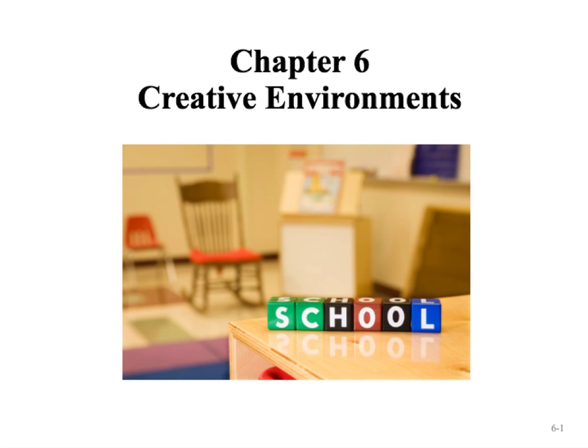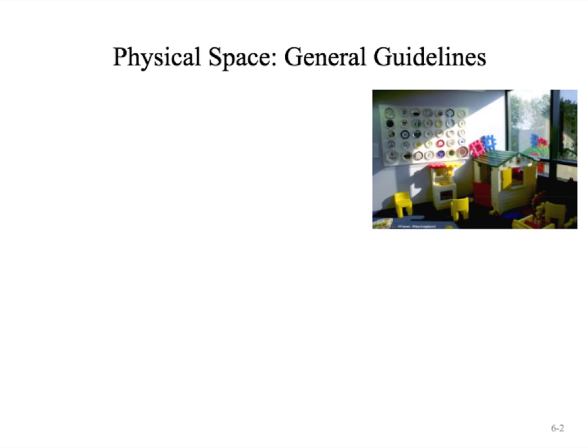Chapter 6: Creative Environments. Things that need to be considered when creating an environment for young children include physical space. I'm going to list some of the things covered in Chapter 6 that you need to consider when thinking about building a classroom, moving into a classroom, and making it your own space.